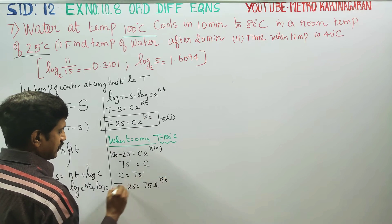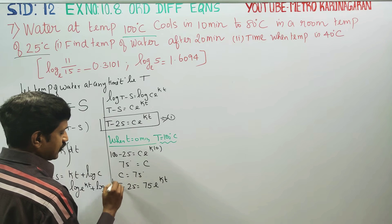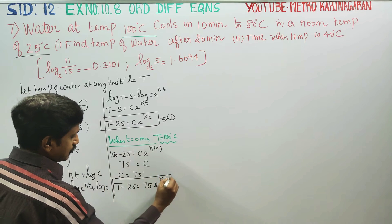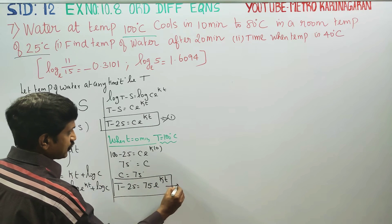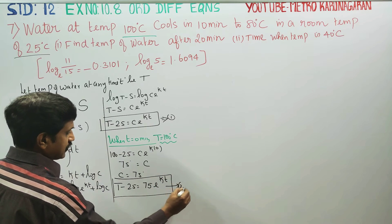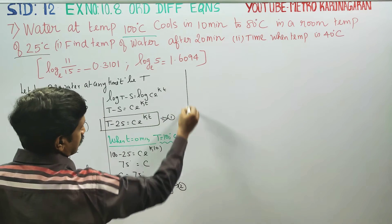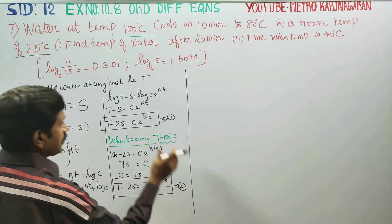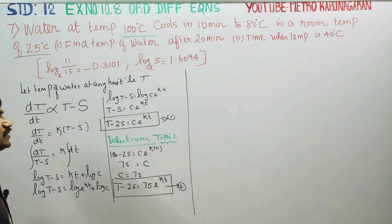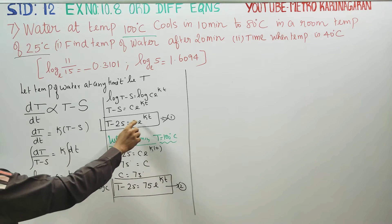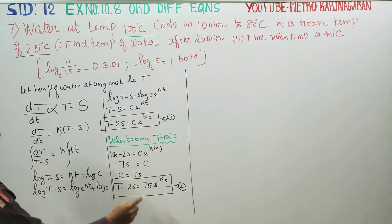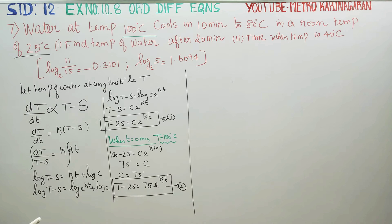Substituting t=0 and T=100 into equation 1: 100 minus 25 equals C·e^(k×0), giving C equals 75. So T minus 25 equals 75·e^(kt). This is the master equation — equation number 2. This is the solution of the differential equation with two constants, C and k.